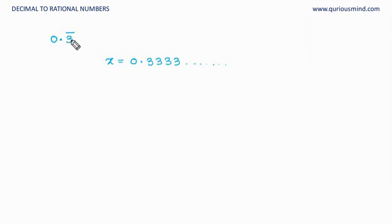Now how many digits are repeating? 1. So we will multiply by 10. 10 has 1 zero. So 10x is equal to 3.3333 and so on, which is equal to 3 plus 0.3333 and so on. But this 0.3333 is equal to x. So that would be 3 plus x.